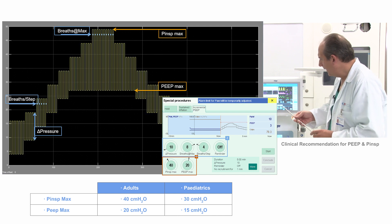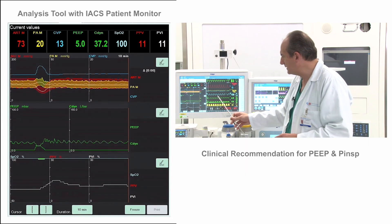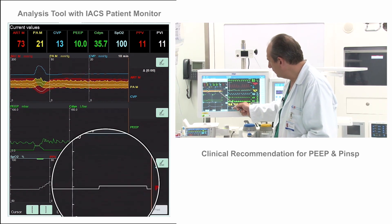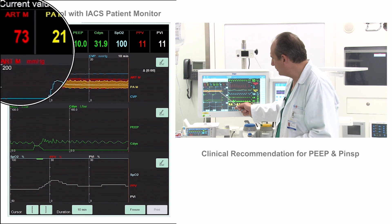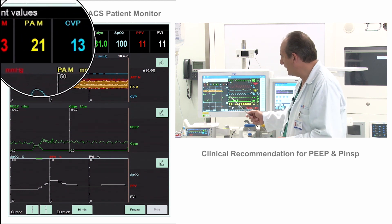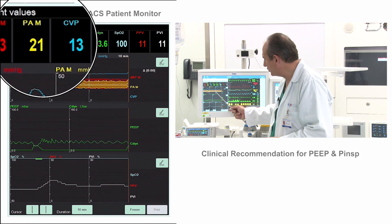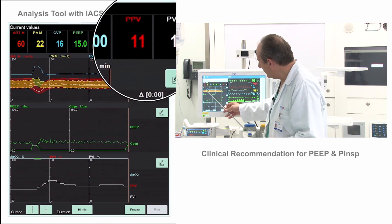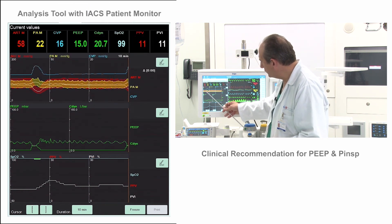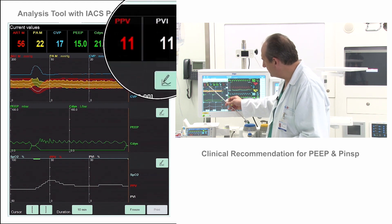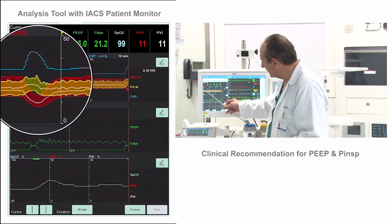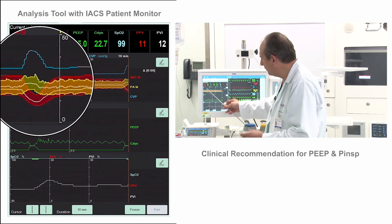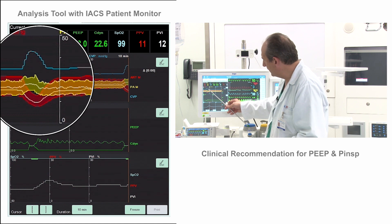So we push start. The great thing is that we are going to see at the same time the real consequences on all sides. Here in red we have the mean blood pressure, in yellow is the pulmonary mean pressure, and here we have the PIP, dynamic compliance and PVI. We did the manoeuvre five minutes before, and you can see all the effects. The blue line is central venous pressure.